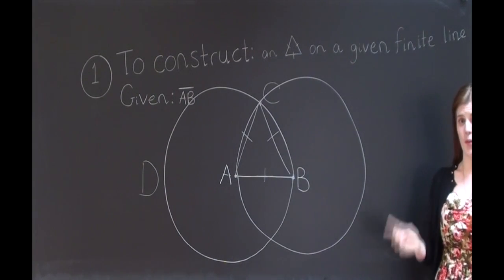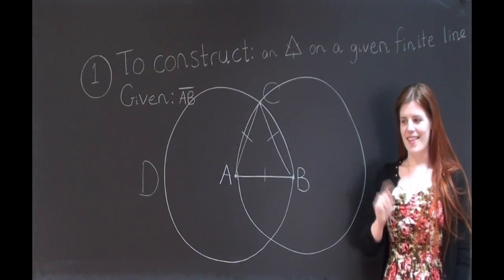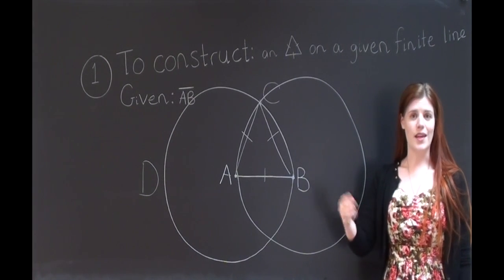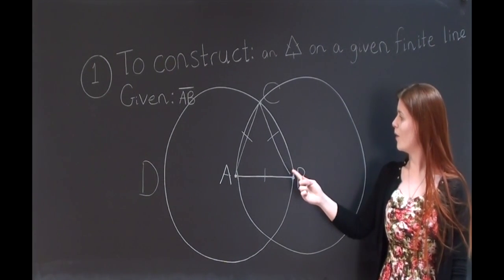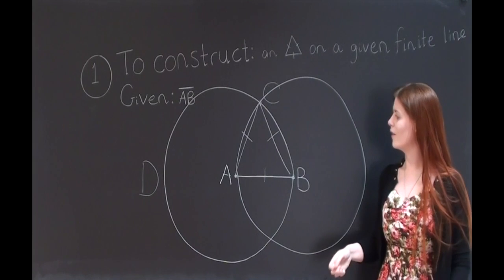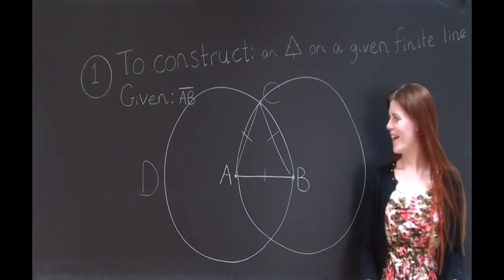Now, because of Common Notion 1, we know that things that are equal to one thing are also going to equal each other. And so we know that all of these sides on the triangle are going to equal each other, hence an equilateral triangle.